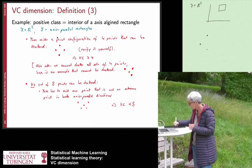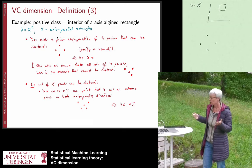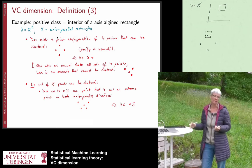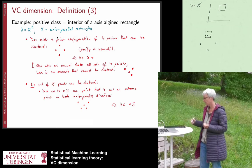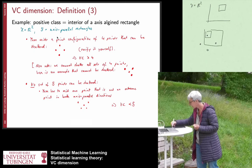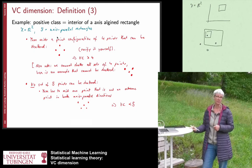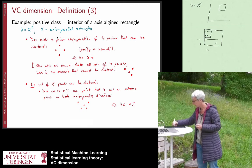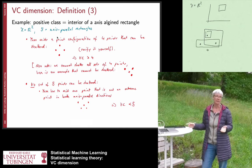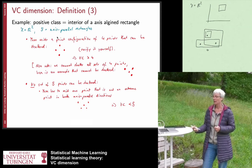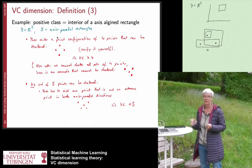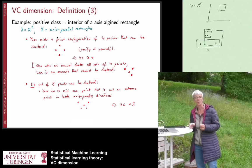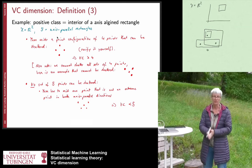For n=4 you can find a point configuration that can be shattered. Consider four points placed at extreme positions. If you want any single point to be plus one, that is easy; the same for all other points. For two adjacent points being plus one, or even two opposite points being plus one and everybody else minus one, it also works. This particular data configuration can be shattered, so the VC dimension is at least four.